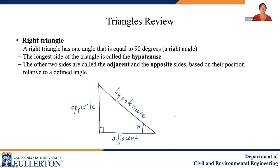We also have a right triangle, so named because it has one angle that is equal to 90 degrees, which is a right angle. The longest side of this triangle is called the hypotenuse. The two other sides are called the adjacent and opposite sides, based on their position relative to a defined angle. So if I define this angle here as theta, the side next to that angle is the adjacent, and the side opposite that angle is the opposite.